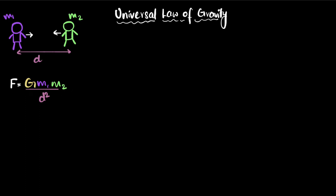So what is G over here? G is called the universal constant, or the universal gravitational constant. And its value happens to be 6.67 times 10 to the power minus 11 units. It's such a small number.